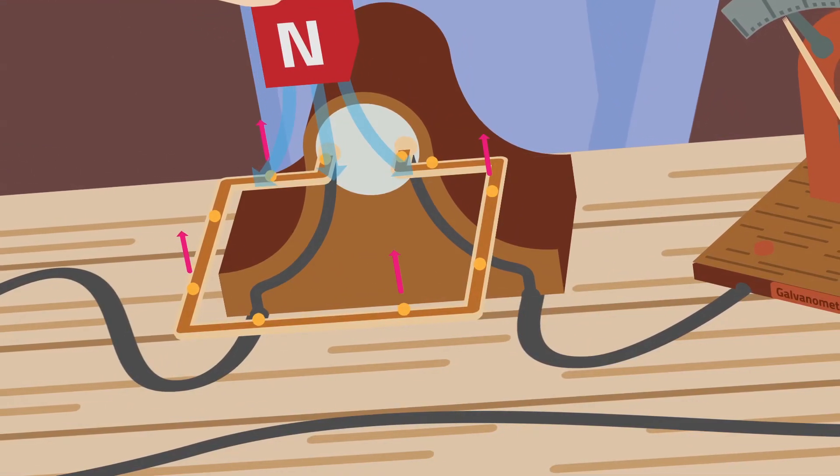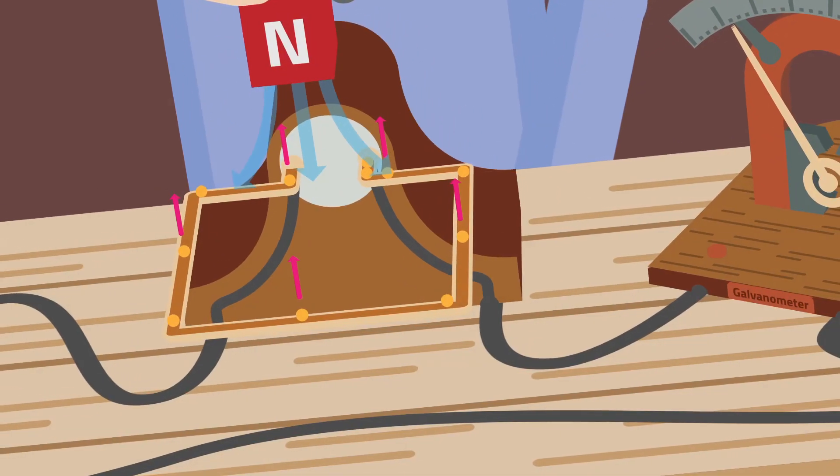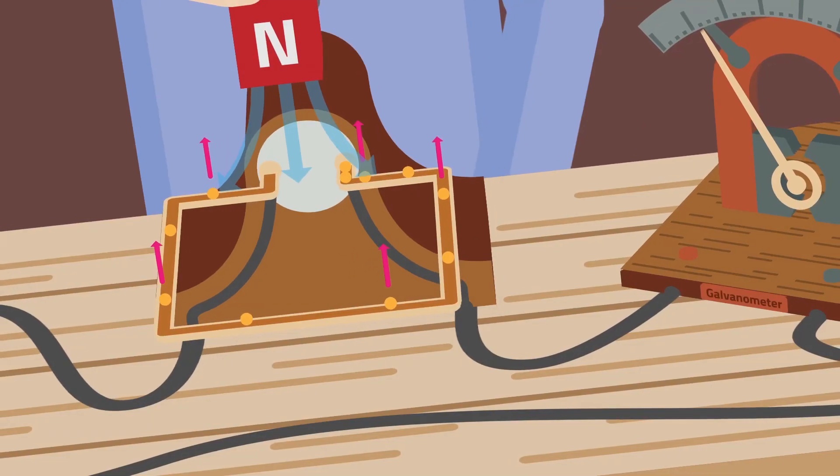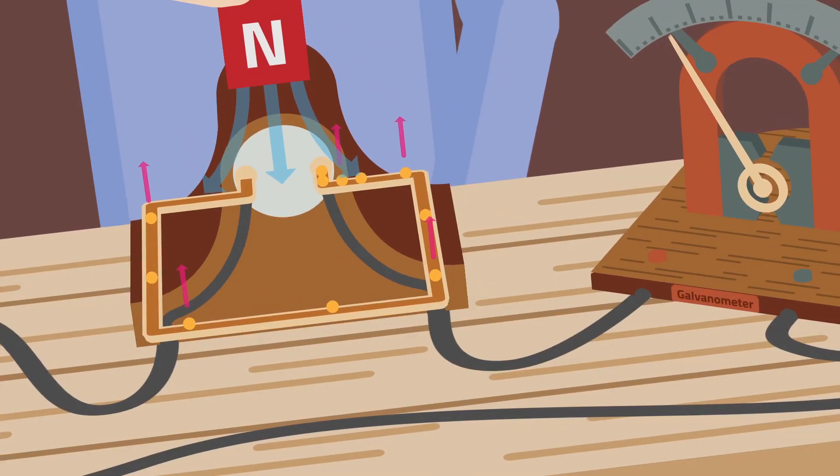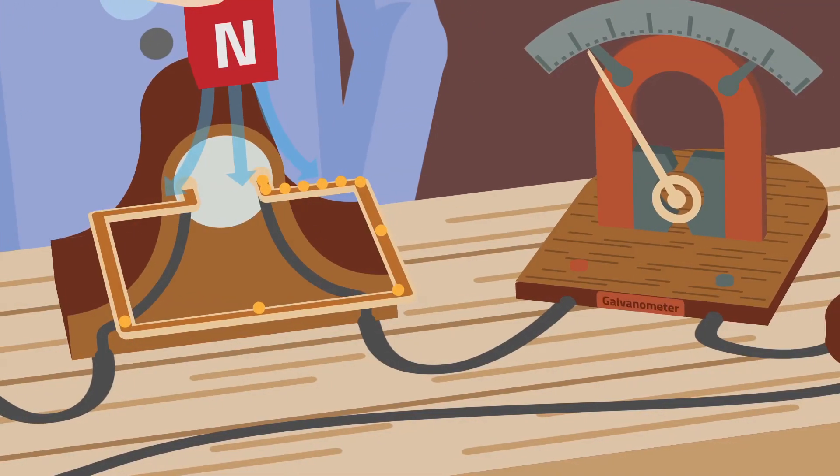The free electrons inside the copper wire experience a force. This force is called the electromagnetic force. This force makes the electrons move to one end of the copper winding, and here the potential becomes negative.